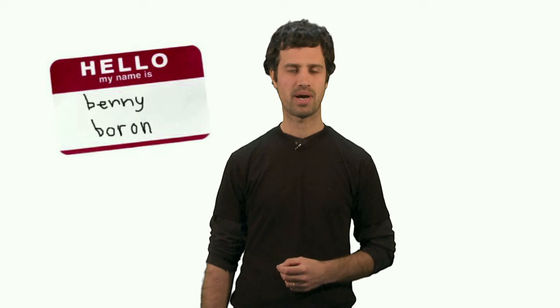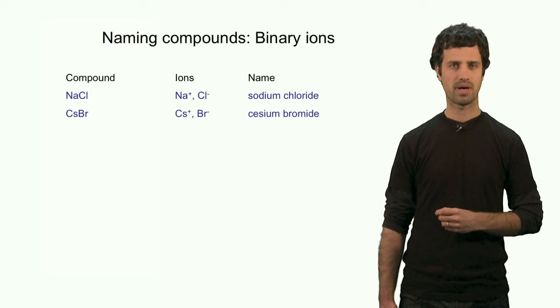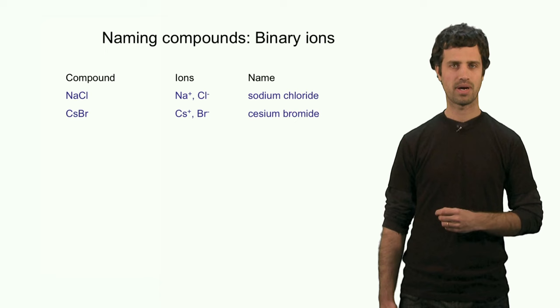Let us first focus on binary ionic compounds. These are compounds that have one cation and one anion. Sodium chloride is one such example. It's composed of sodium plus cations and Cl minus anions. The name is sodium chloride.